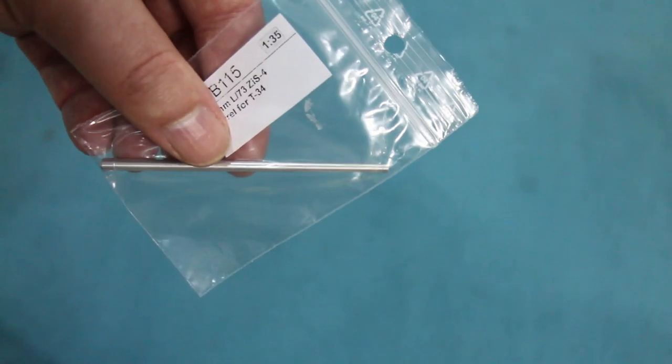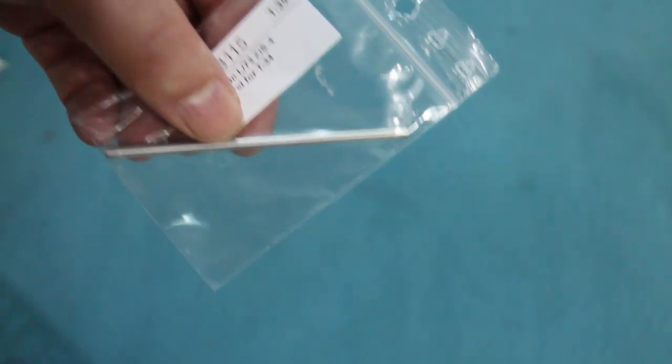There's the gun barrel. You can see it's in two halves. Now you can actually get, I've got one separately here, you don't get this with the kit, but it's possible to get a separate barrel. This one is from RB.